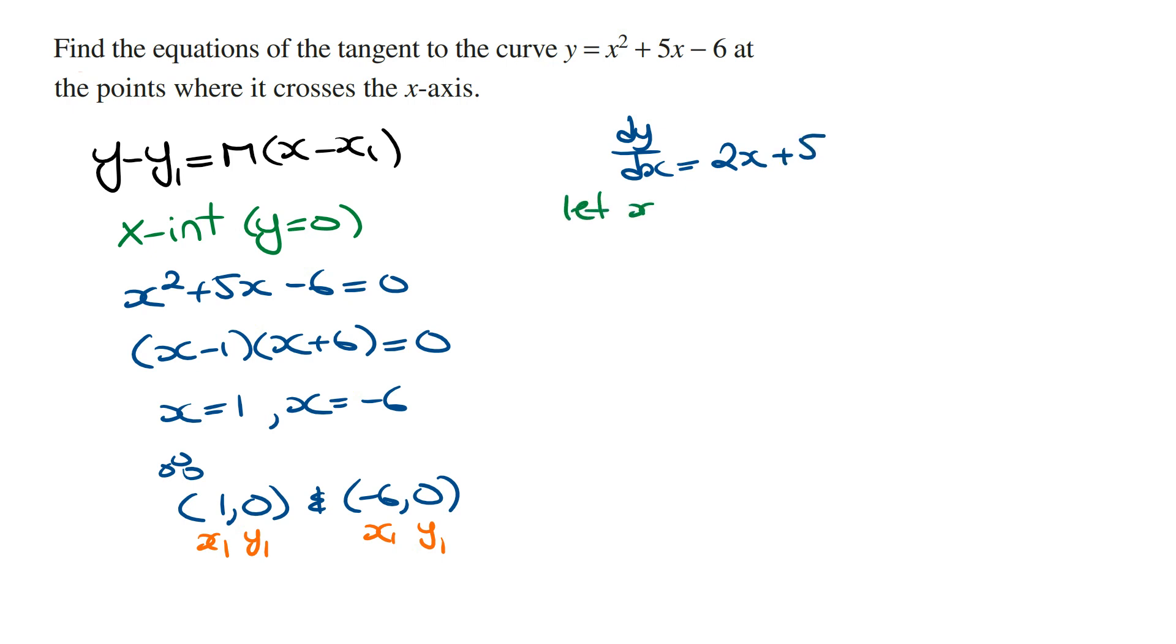When x equals 1, dy/dx equals 7. When x equals minus 6, dy/dx is 2 times minus 6 plus 5, which is minus 12 plus 5, which is minus 7. And so the value of m, which is the gradient of the line at these points, is going to be 7 and minus 7.